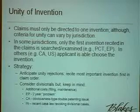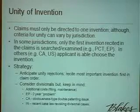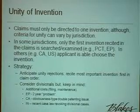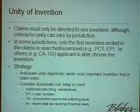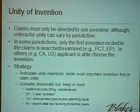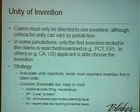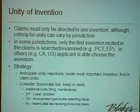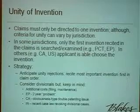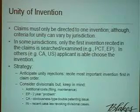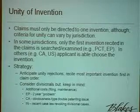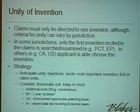The strategy here is to anticipate these unity rejections. I recommend to clients that if you have a preferred invention included in the claims, try to recite that first — so when it gets to jurisdictions like PCT or Europe, your preferred invention is reviewed first. In Europe, we also have this two-year problem for divisionals, so even though you have the right to file divisionals, there's this issue with that two-year problem.